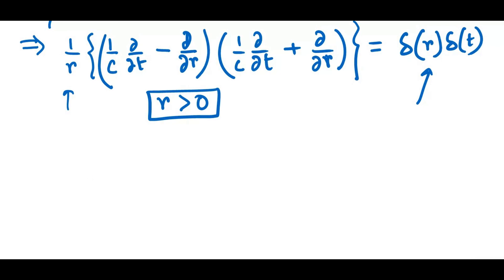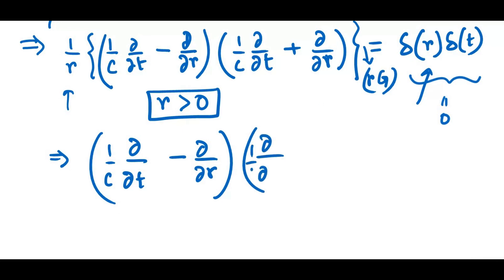we can write... I think I missed something in here, we should write R times G. So that's missing. So if R is indeed greater than 0, then this right hand side is equal to 0, and we can also send this R to the other side. And finally, we are left with this equation here, 1 over C minus this, and then 1 over C times derivative plus the spatial derivative, acting on R times G equals 0.